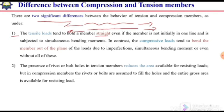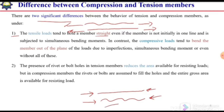In the case of a compression member, even if a member is straight, if we apply a compressive load, it will bend in a direction perpendicular to the load — either in this shape or like this. The applied compressive load will try to bend the member in a transverse direction, perpendicular to the line of applied loads.